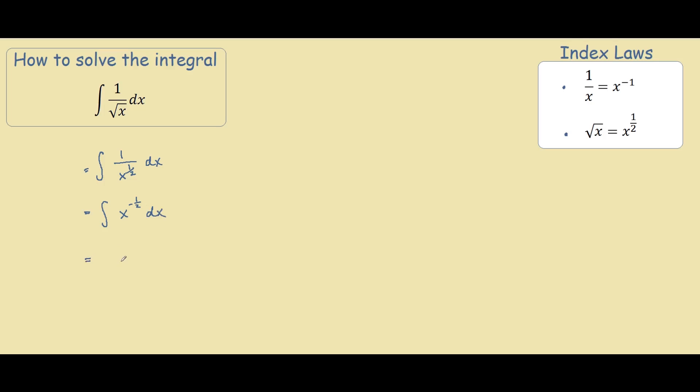Now it's just normal integration, we raise the power by 1 of the index, so we have half, negative half plus 1 is half, and we divide by a new power with a constant.